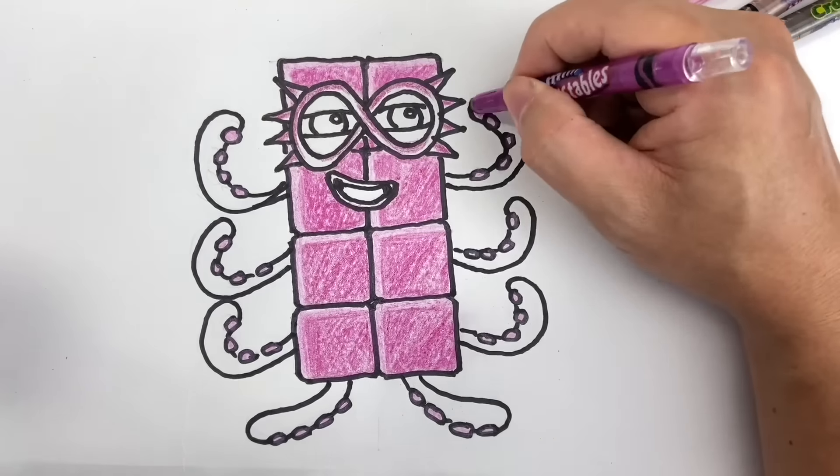Then use the brown crayon to color in the rest of his eyelids, mask, mouth, arms, and legs.